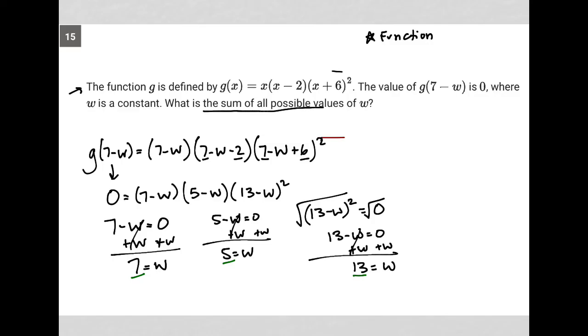We have all possible values of w: 7, 5, and 13. I just want to add those all up. 7 plus 5 plus 13. 7 plus 5 is 12, plus 13 is 25. So the answer to this question is 25.